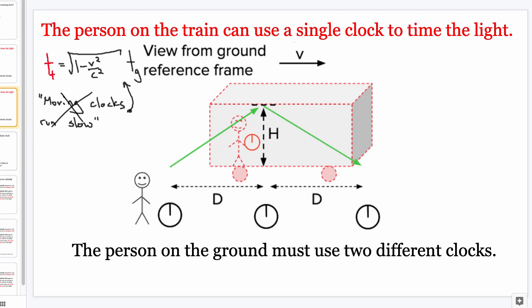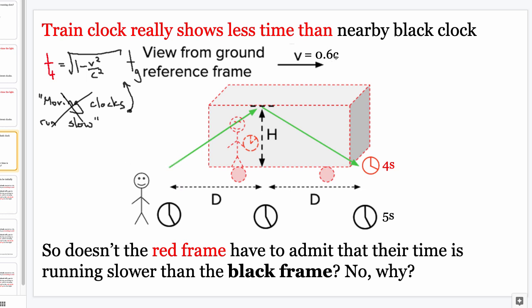So how is it the case that both people measure each other's clocks running slow? Let me put some numbers in. Let's say red is moving to the right at 0.6 the speed of light. If black measures that this light took five seconds to go up and down — plug 0.6c into v in the time dilation formula — red would only measure four seconds. So black says: your clock measured four seconds, my clock measured five seconds, your clock's running slow, red.